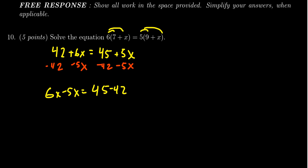6x minus 5x just gives us an x, and 45 minus 42 just gives us a 3, and so that is then the solution to this equation.